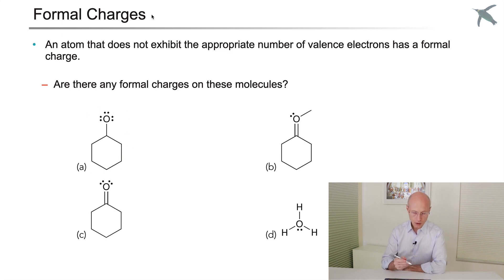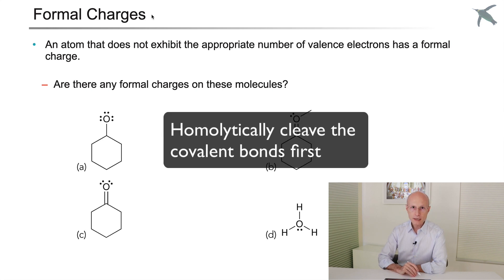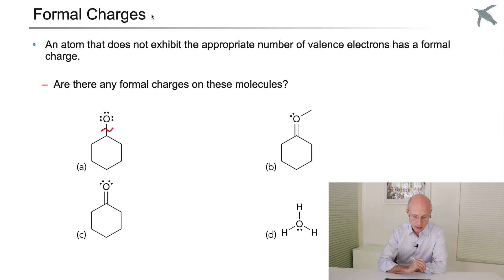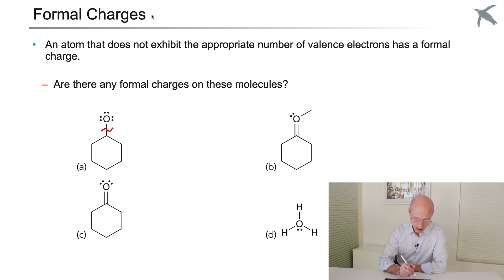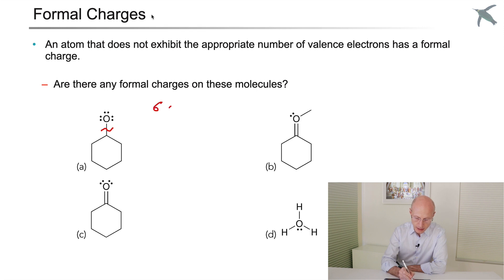The easiest way to compute formal charges is to homolithically cleave all the covalent bonds first. I will cleave this bond and look at the oxygen. How many electrons does the oxygen have? It has two, four, six, seven, because half of the bond is worth one electron. Normally, oxygen has six electrons. Here, it has seven electrons, so it has one extra. It has a charge of minus one. Electrons are negative. One extra electron means a minus one charge.